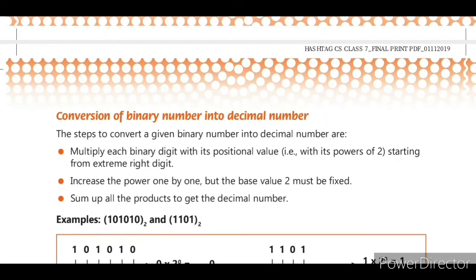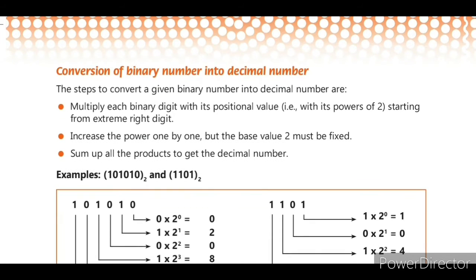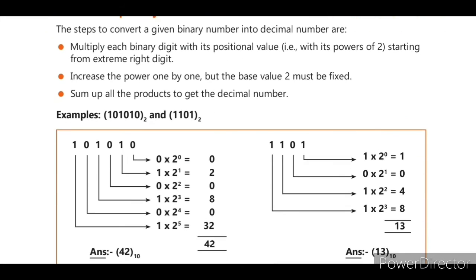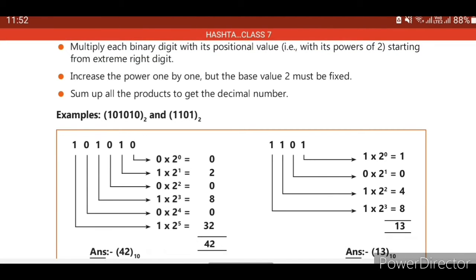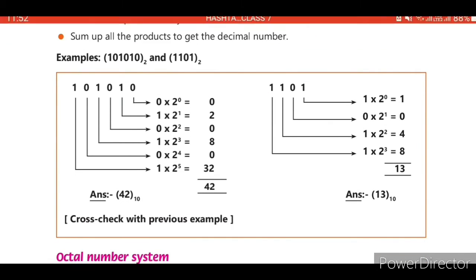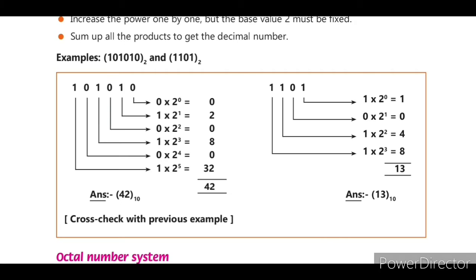We have also seen how to convert binary to decimal. Multiply each binary digit by its positional value — the powers of 2 — increasing the power from 0, 1, 2 and so on, while the base value remains fixed at 2. Then sum all the products to get the decimal number, which is written with base value 10.